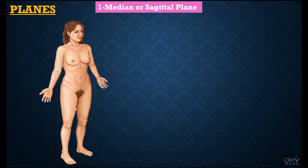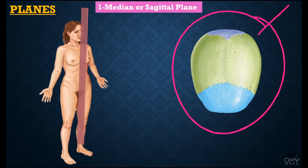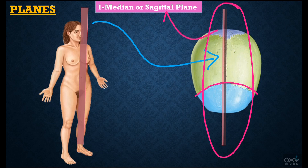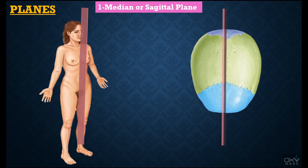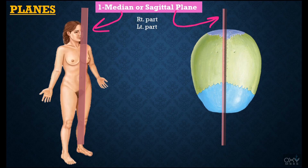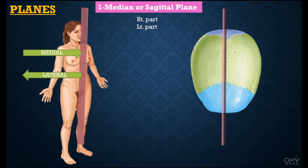First we will discuss the planes. Under planes, first is the median or sagittal plane. This body is in anatomical position, and a plane passing through the midline of the body is called the median plane. This is our skull seen from the top — it has a frontal suture and a sagittal suture. As this plane passes through the sagittal suture, it is also called the sagittal plane. Planes parallel to this sagittal plane are called parasagittal planes. The median or sagittal plane divides the body into right and left parts. Parts present towards this plane are called medial, and parts present away from it are called lateral.